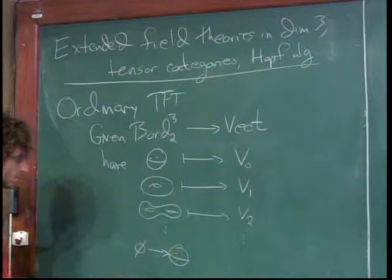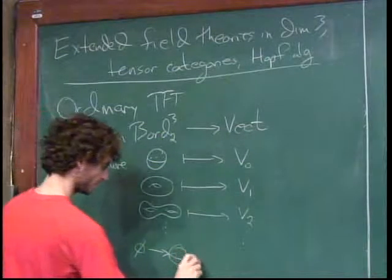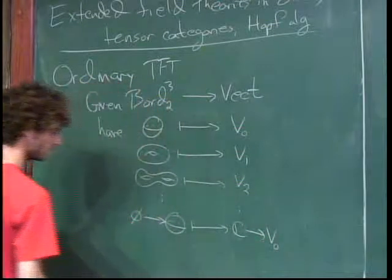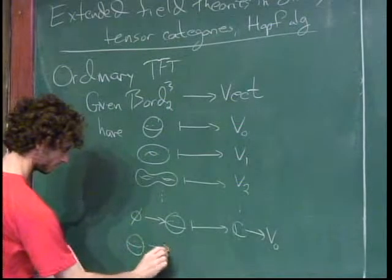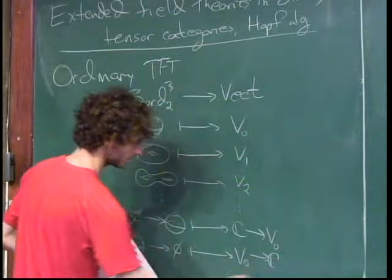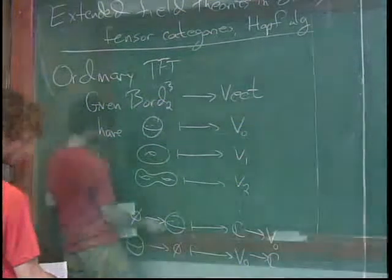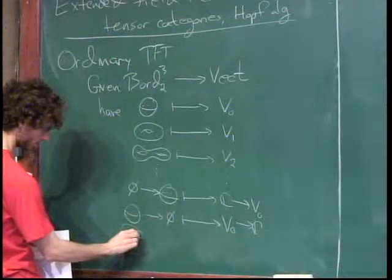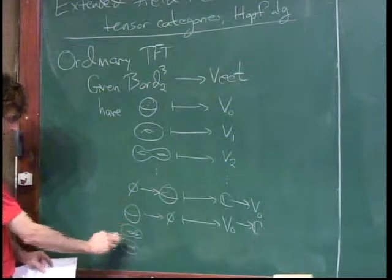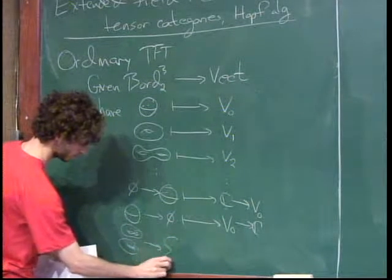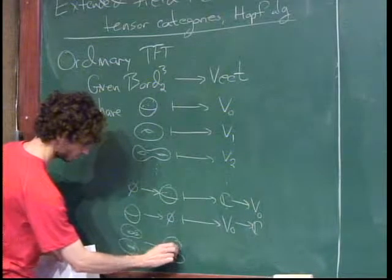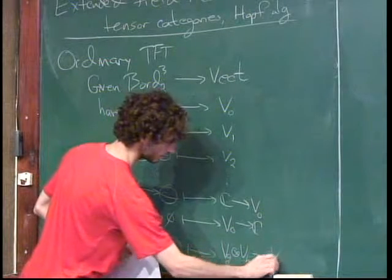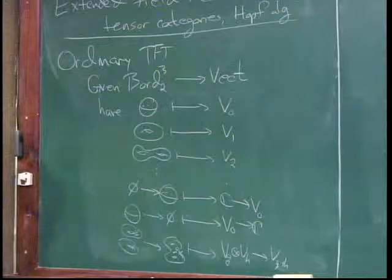There's a bordism from the empty manifold to the sphere — just the solid ball — so that goes to some map from ℂ to V₀. And we could go the other way: some map from V₀ to ℂ. If we have two surfaces, one of genus G and one of genus H, we could glue a handle between them to get a surface of genus G+H. That gives us a map from V_G ⊗ V_H to V_{G+H}.